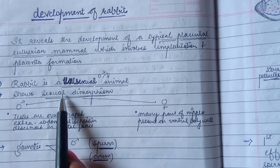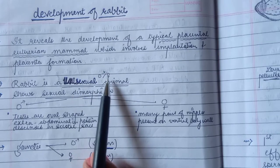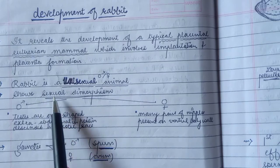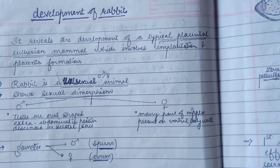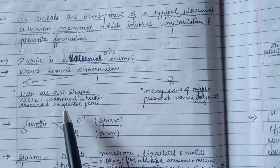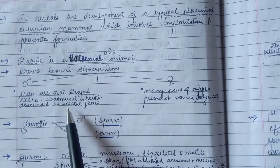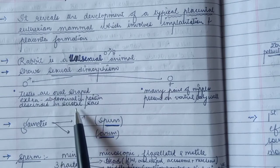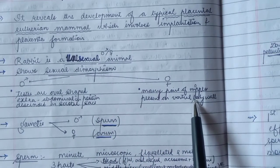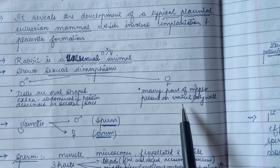After that, we will see that the rabbit is a unisexual animal. Either a particular individual is male or female. Now, the rabbit shows sexual dimorphism. You can distinguish which one is male and which one is female. We can determine the sexes morphologically. Male has testes oval shaped and extra abdominal. They are hanging out of the abdomen and descended in scrotal sac. In female, on the ventral body surface, there are many pairs of nipples.